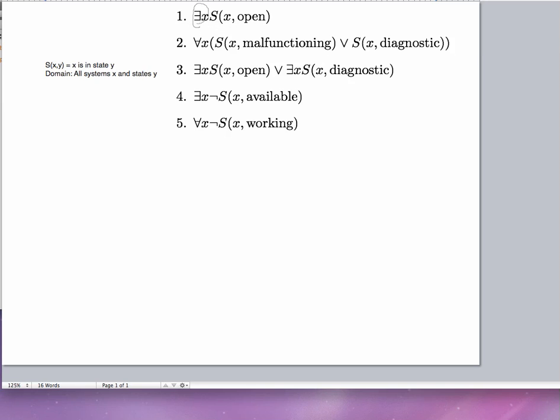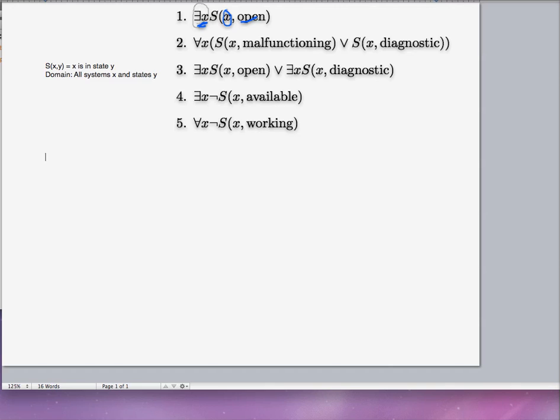Let's go down and see if we can make sense of this. There exists an x such that system x is open. That would be a pretty good English translation. We could just say there exists a system that is open. That would be one way to say that. So simple as that, just simply translating piece by piece. So simple as that.